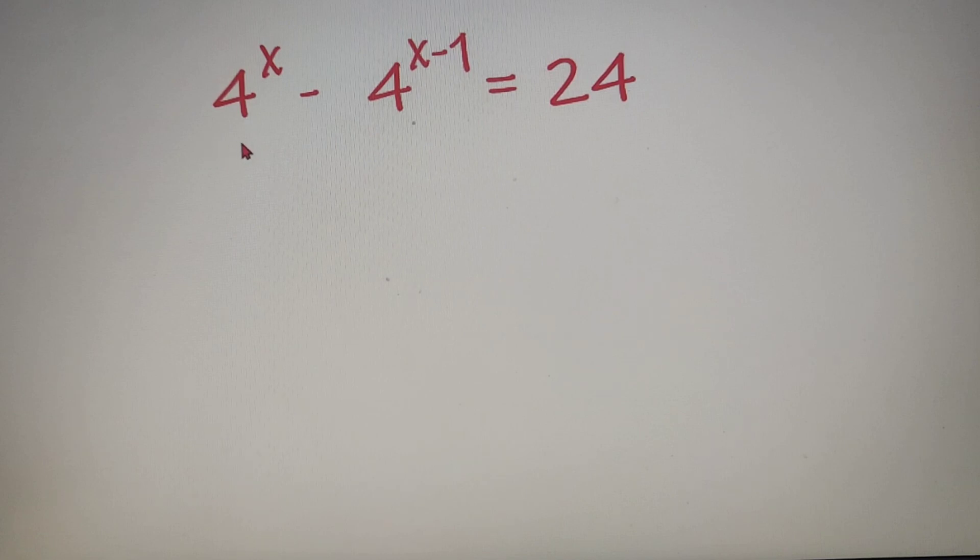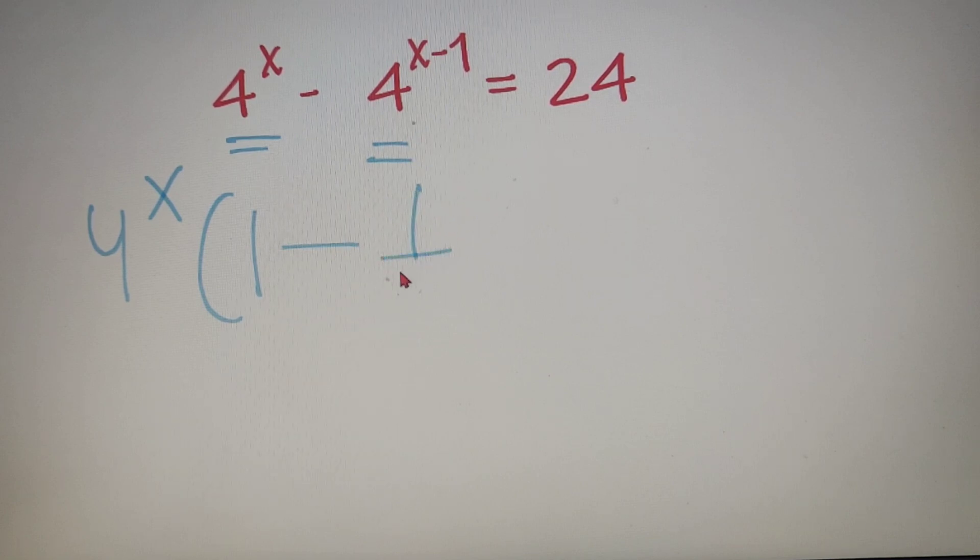Now I can see 4 raised to the power x common in these two parts so I will take it out as common. So I will get 4 raised to the power x into 1 minus, when 4 raised to the power x is taken from 4 raised to the power x minus 1, I will get 4 to the power minus 1 that is equivalent to 1 by 4. So I will write 1 minus 1 by 4 and it is equal to 24.